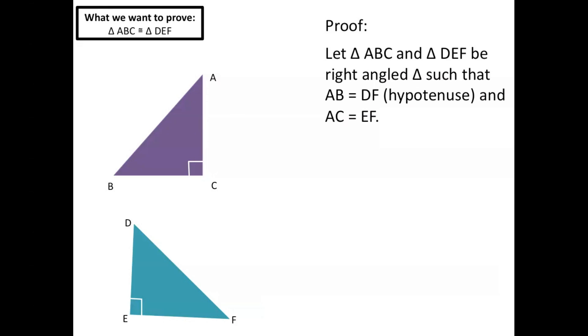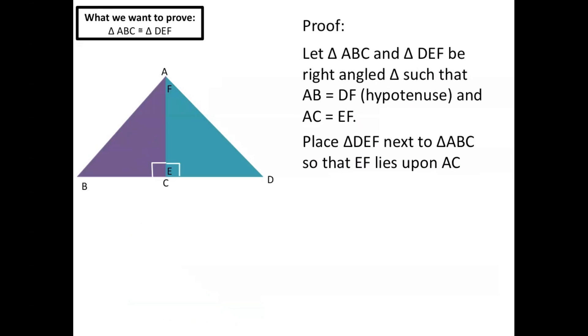So to conduct the proof, first we're going to move the triangle DEF next to triangle ABC so that the sides that we assume are equal, AC and EF, can lie upon one another. And once we do that, because we know that AC and EF are equal, we see that they fit perfectly on top of one another.